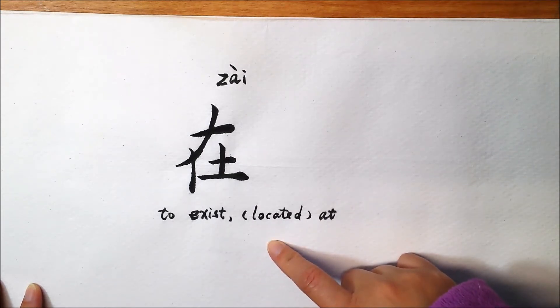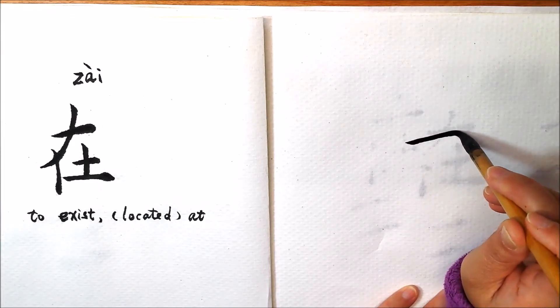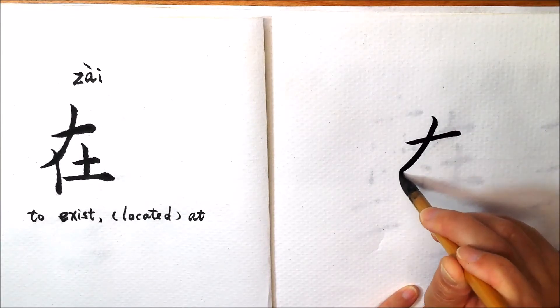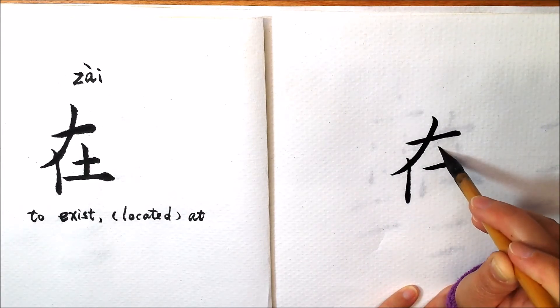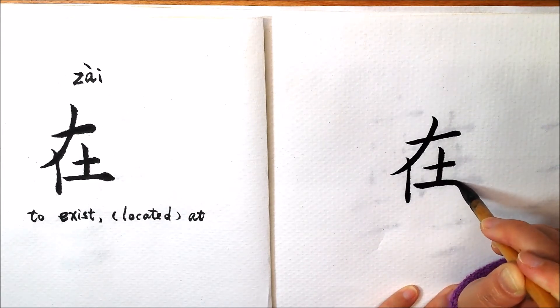First, let's see how to write it. The oldest writing of this character shows us the structure of house beams and columns.